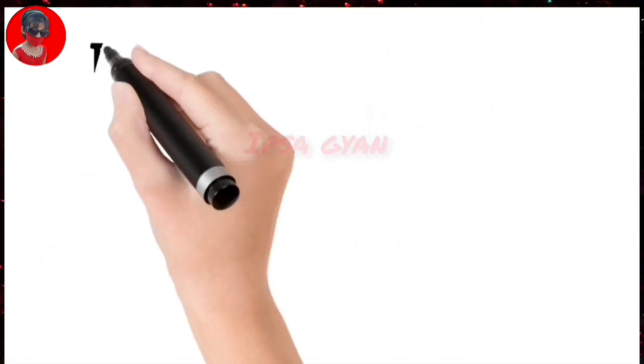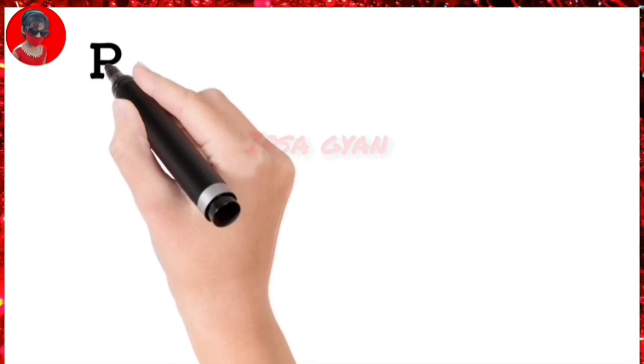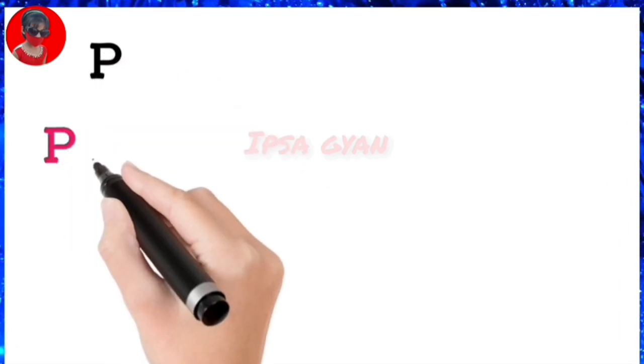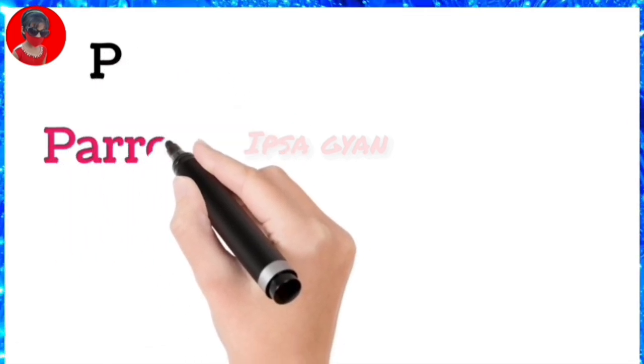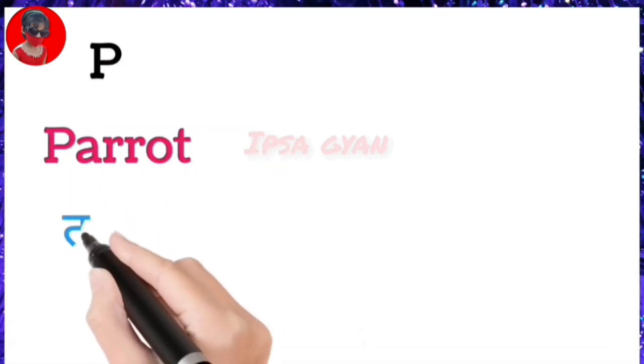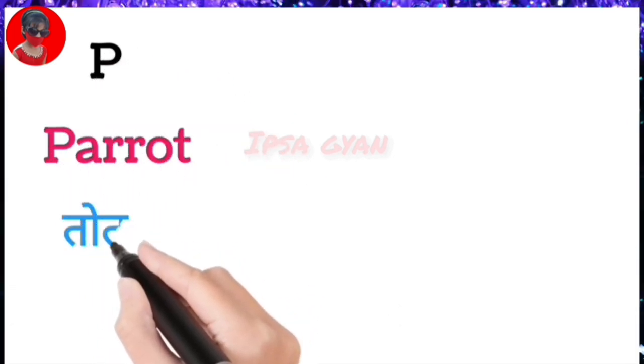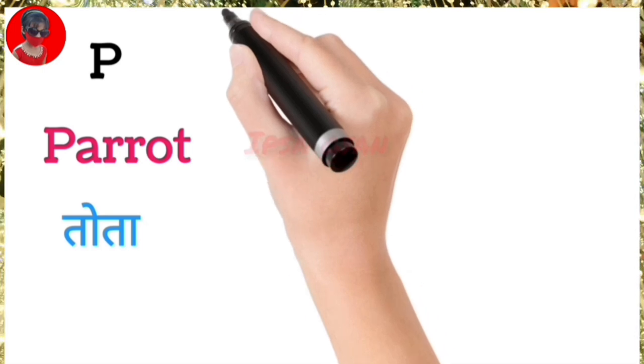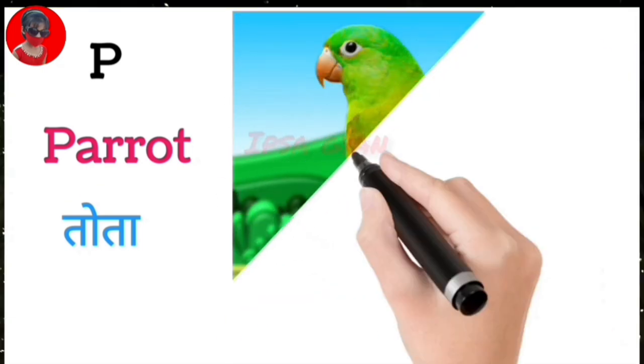P for parrot, parrot means toota. P for parrot, parrot means toota.